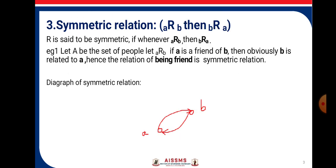Symmetric Relation: if A is related to B, then B is related to A. R is said to be symmetric if, whenever A is related to B, then B is related to A. Let A be a set of people. Let A be related to B if A is a friend of B — then obviously B is related to A. Hence the relation of being a friend is symmetric. From the digraph, you can see A is related to B and B is related to A.